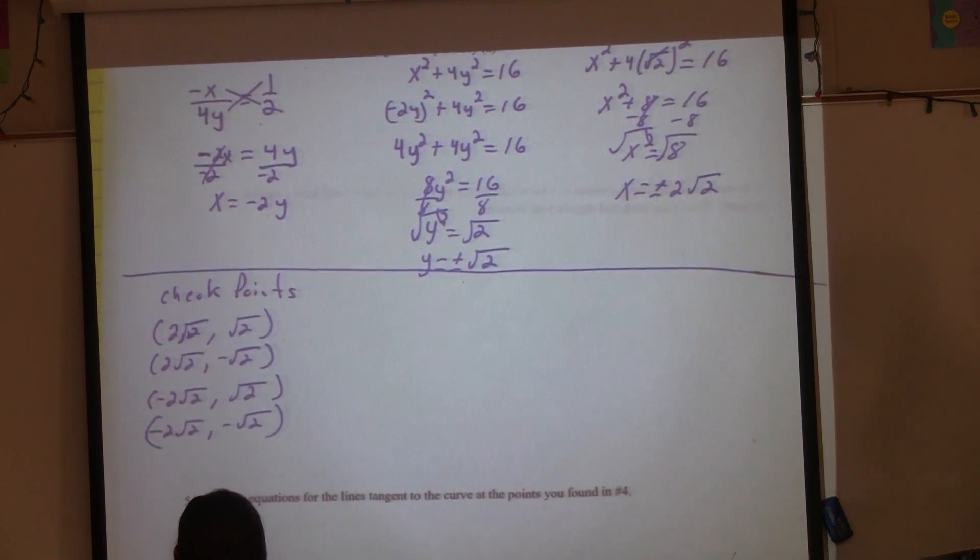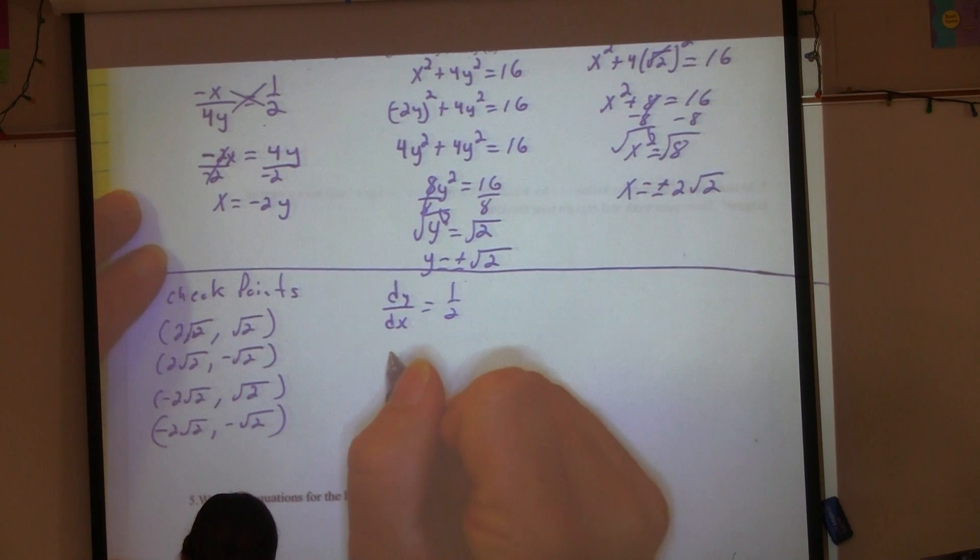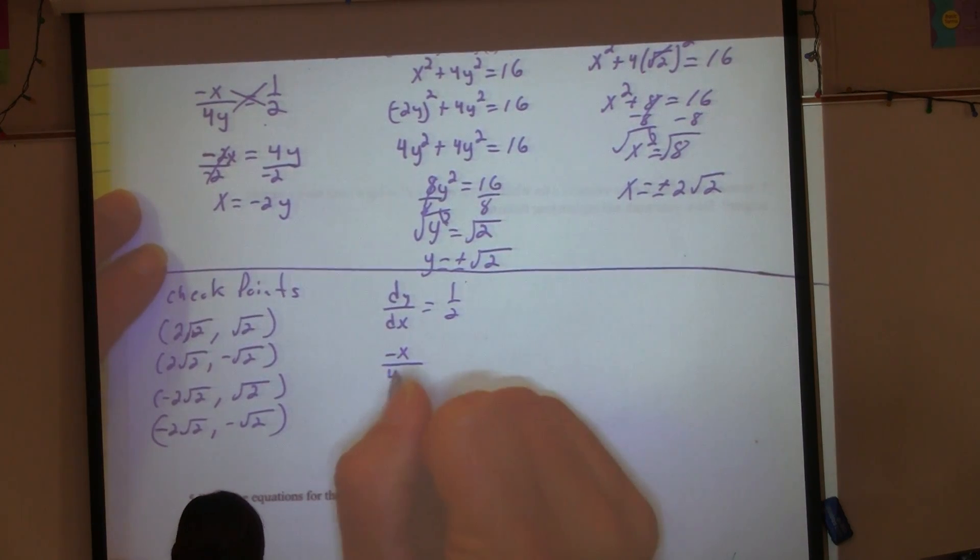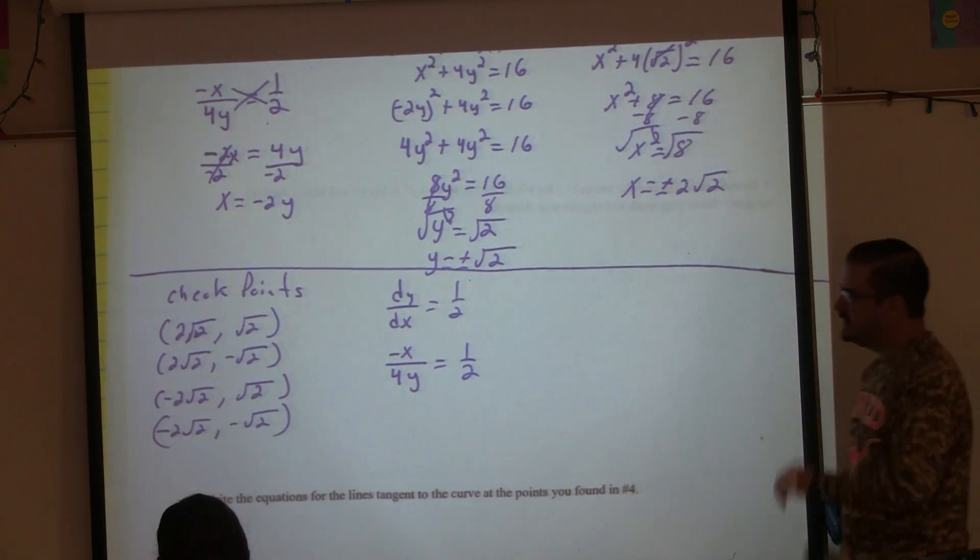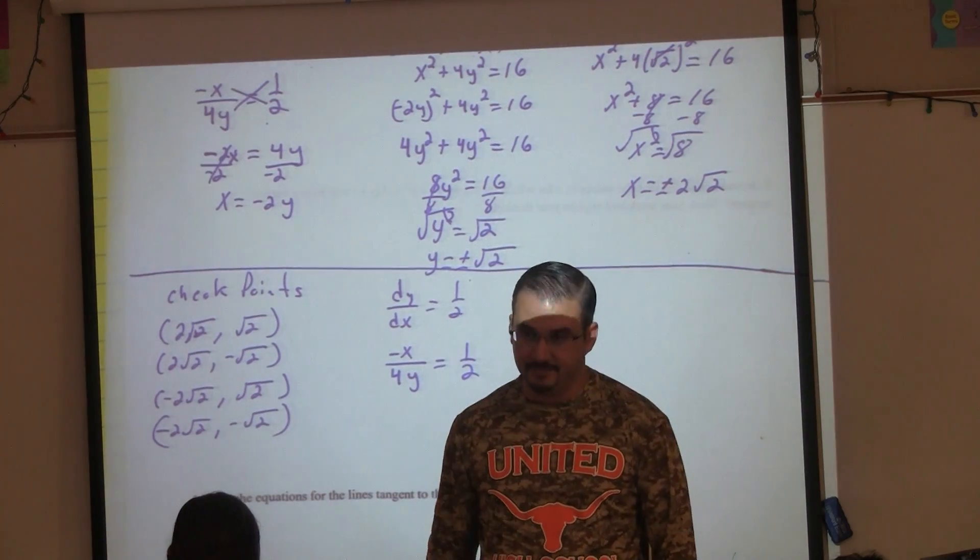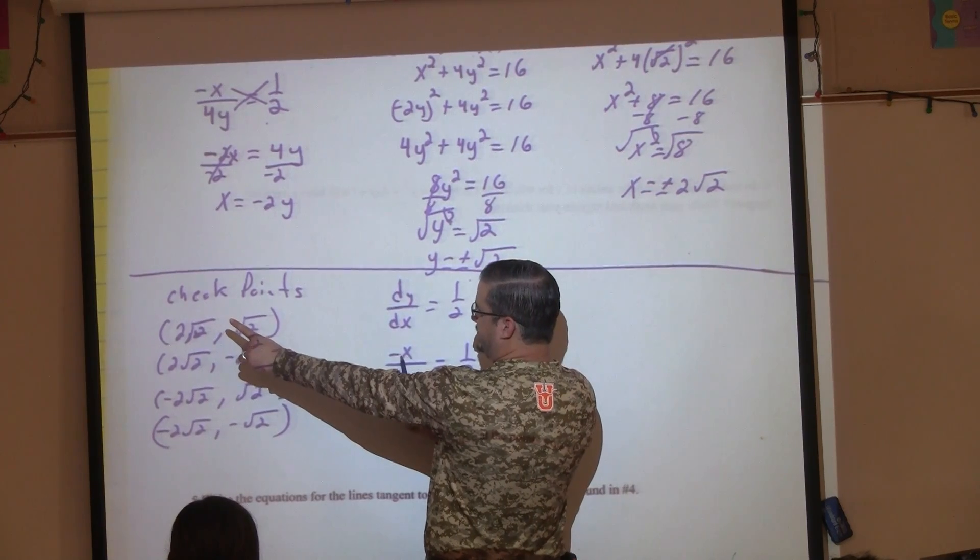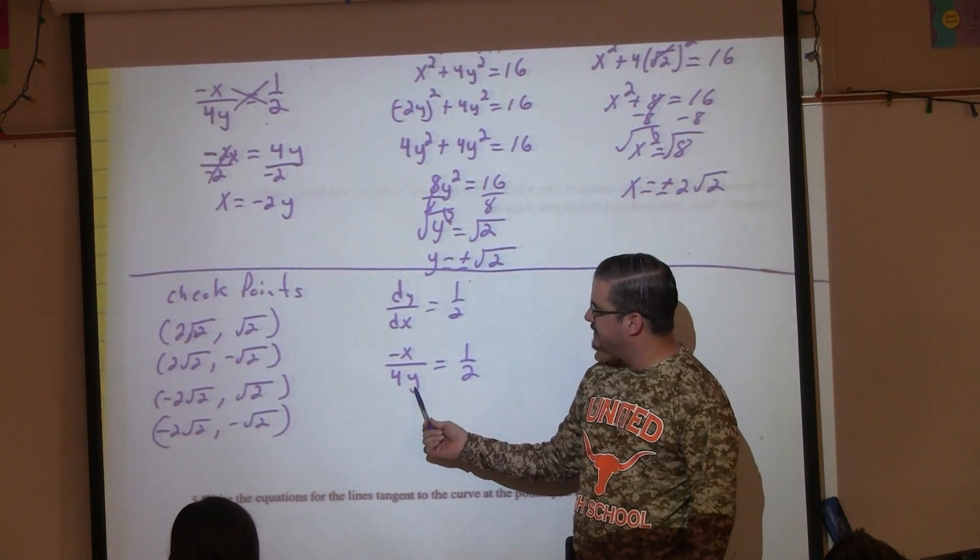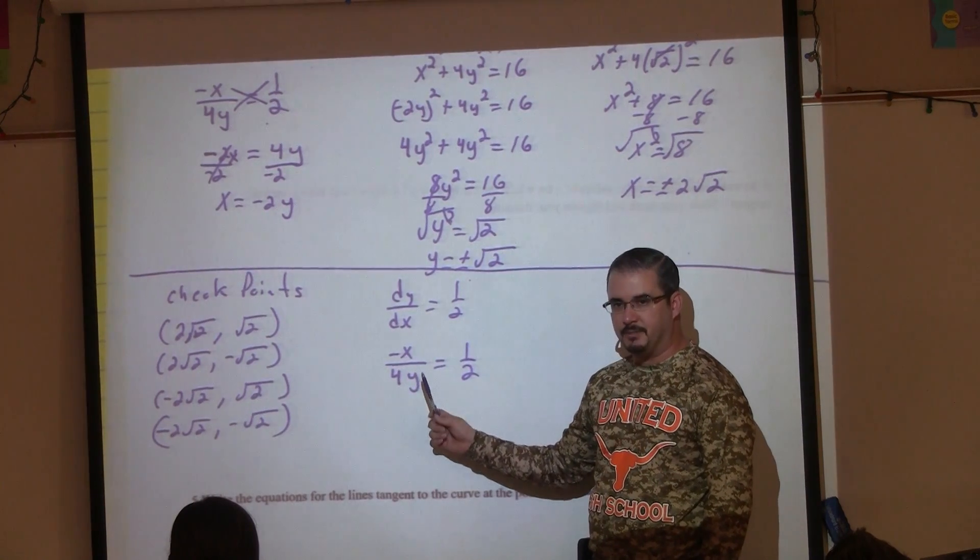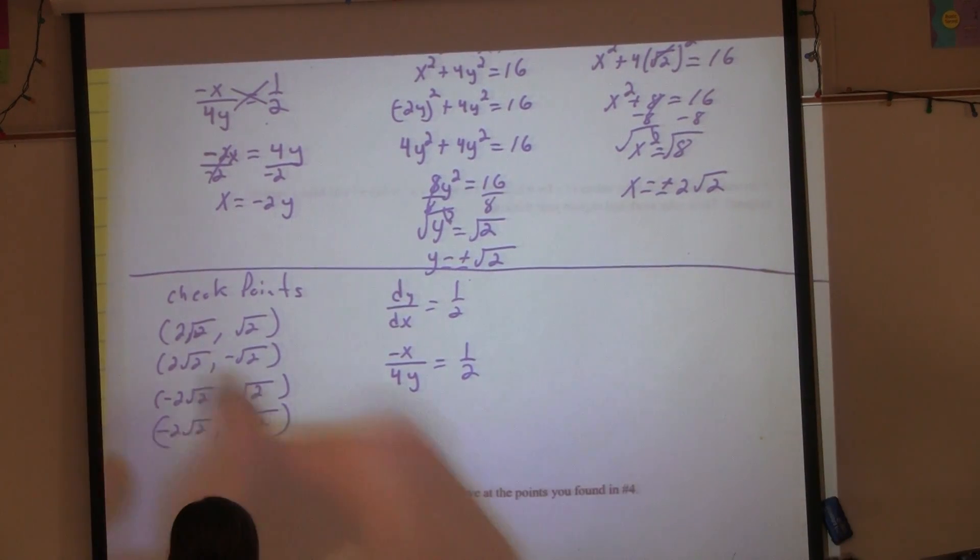Let's write down the points. What are they? Or what could they be? Let's start off with the positive X. So (2√2, √2), and then we've got (2√2, -√2). What would be the other ones? (-2√2, √2), and (-2√2, -√2). So these are my possibilities. I don't know if they're all going to give me a slope of 1/2. We can't assume that. We have to make sure.